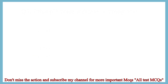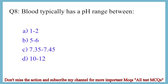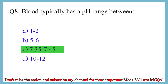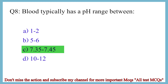Question No. 8. Blood typically has a pH range between? The correct answer is option C: 7.32 to 7.48.